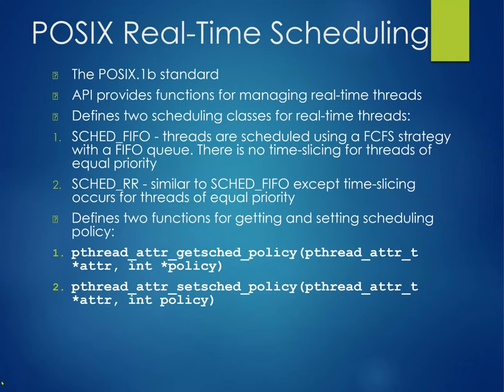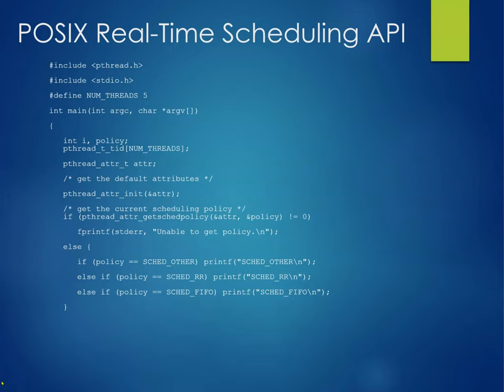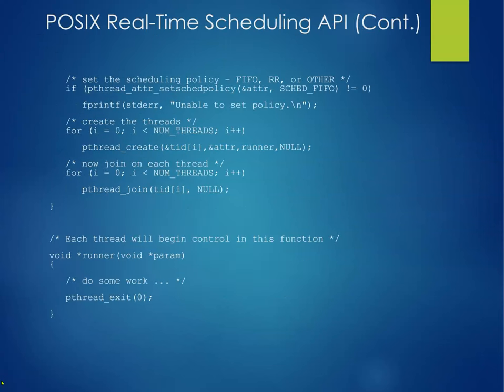POSIX supports real-time scheduling. The API provides functions for managing real-time threads and defines two scheduling classes: SCHED_FIFO and SCHED_RR. The difference is that there's no time-slicing for threads of equal priority in FIFO; round robin introduces that. There are two functions — get schedule policy and set schedule policy. In an example, we get the current scheduling policy, print it, set the policy as appropriate, create threads, join them, and run them.